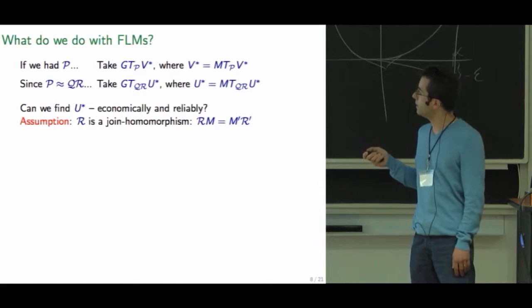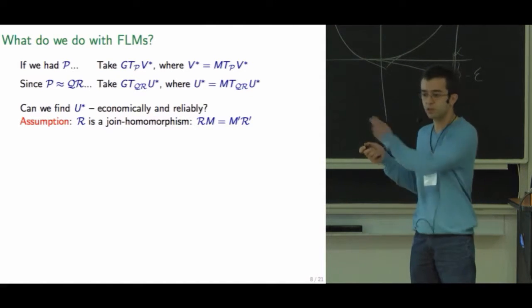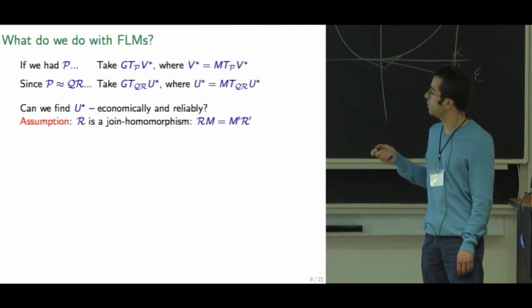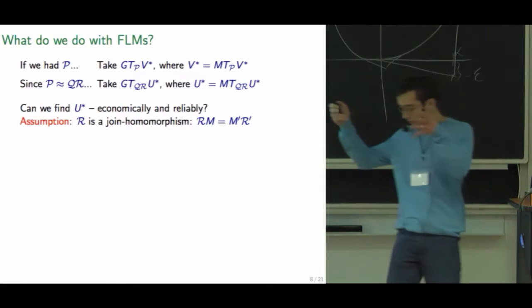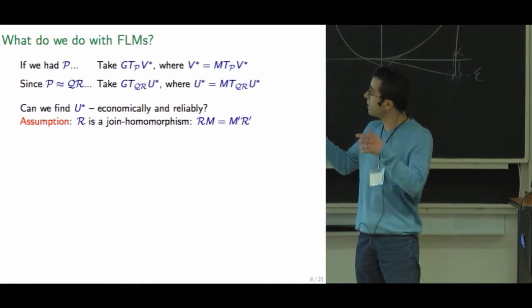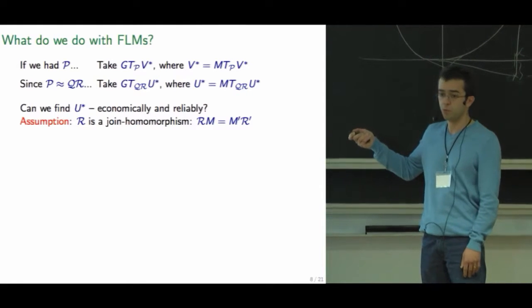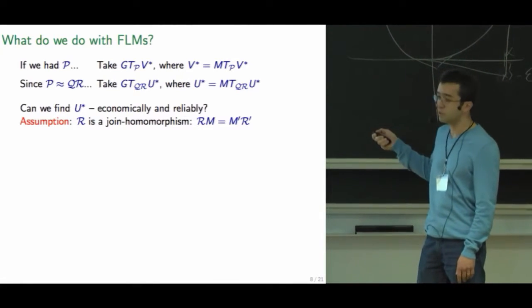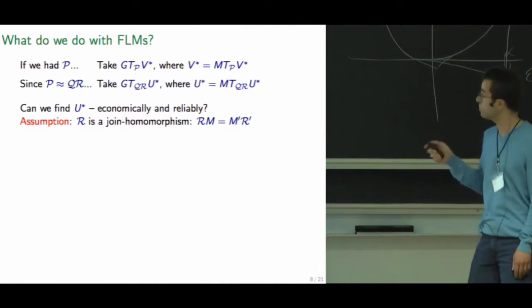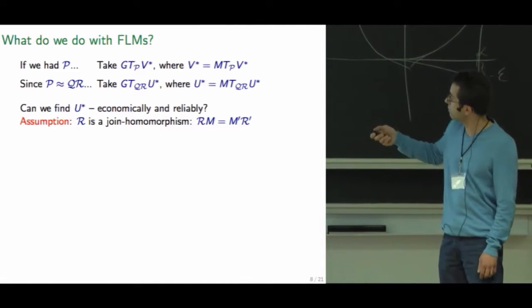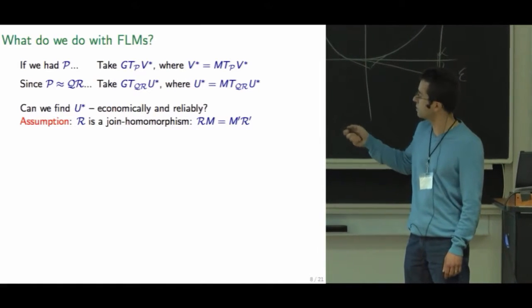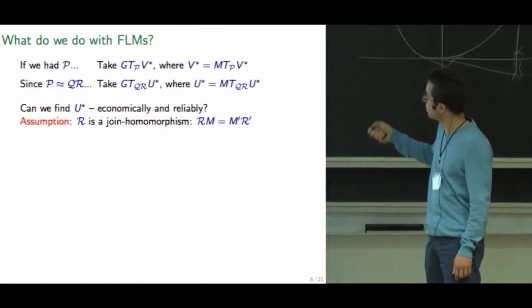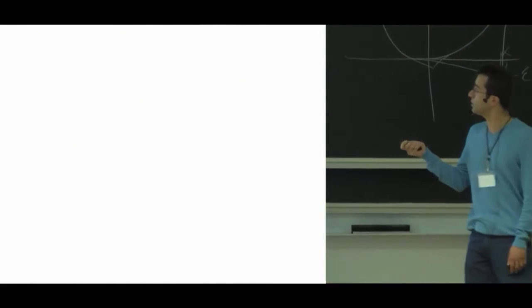And we can do it if R is this join homomorphism. It's basically, meaning it's not much different from the subsampling operator that I described before. But the essential property is that we can commute it with the max, meaning that if you take this, it doesn't matter if you first take the max over the state-action values and then compress the result, or if you compress each of the state values and then take the max on the compressed result.